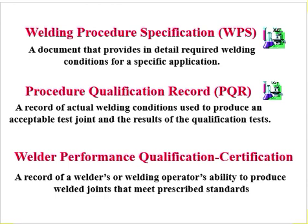First, what is WPS? Welding Procedure Specification — a document that provides in detail the required welding conditions for a specific application. As per ASME standard, every standard has different requirements. If you go to ASME, there is QW-402, 403, 404 which I will cover later. The WPS is the document given to the welder, which tells them the procedure they must produce.